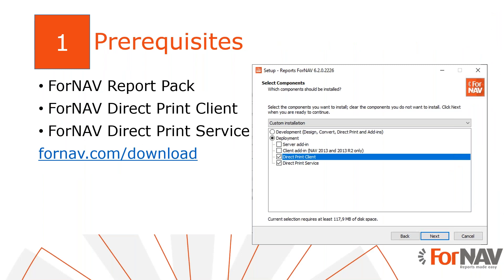I will be printing reports in the Business Central Cloud tenant with the Business Central 2021 Wave 2 release. I have installed the Fornav customizable report pack and executed the step-by-step wizard from the assisted setup to get started. I have installed the direct print client on my PC and set up the direct print service on my print server. The direct print client and service can be downloaded from the Fornav website. Everything I do today is also available in the Business Central on-premise environment.